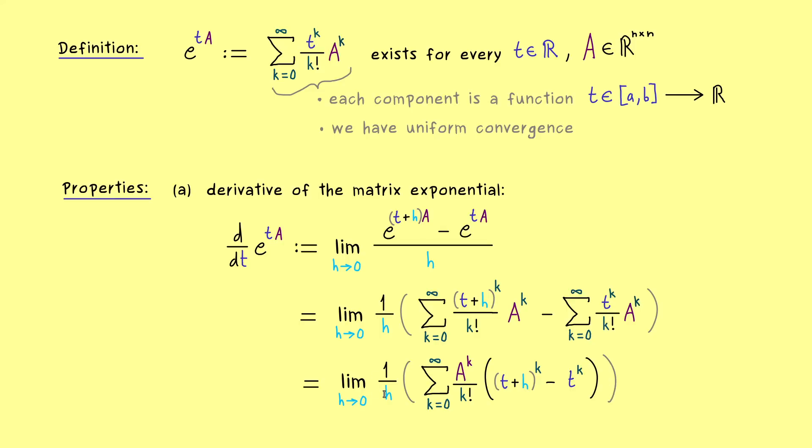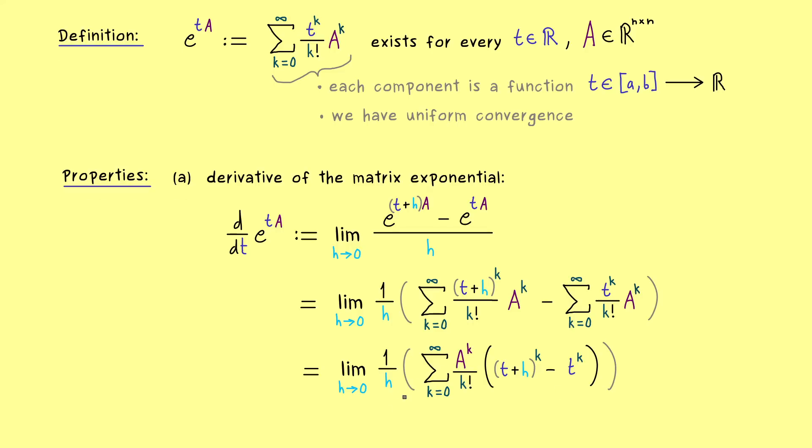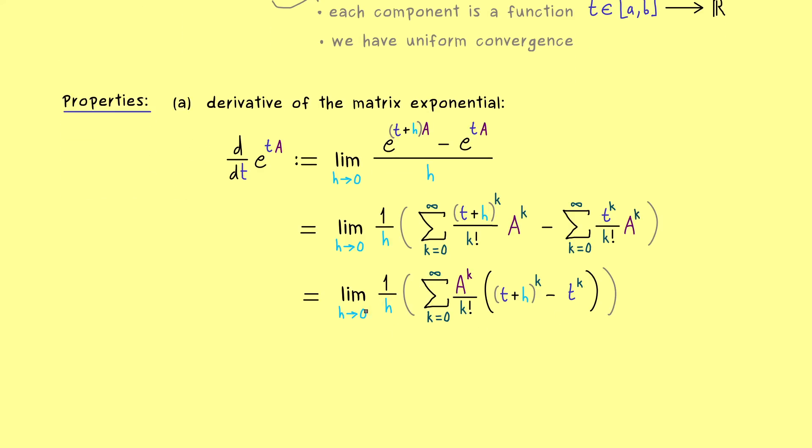And now you might already see what we actually want to do is to pull in this 1 over h and the limit h to 0. Obviously 1 over h is not a problem, but for the limit we need some requirement. Indeed what is actually happening here is that we exchange two limit processes. In general this is not possible, we would get a different result. But for the uniform convergence we know that we can pull the limit in. So you can remember exchanging the limit process here is allowed because we have the uniform convergence of the functions.